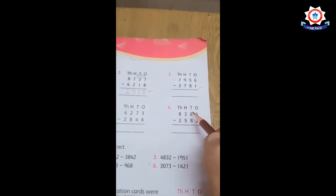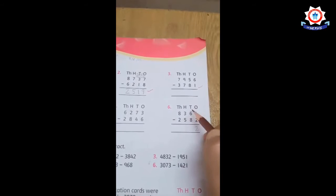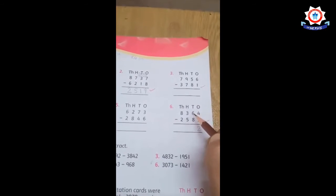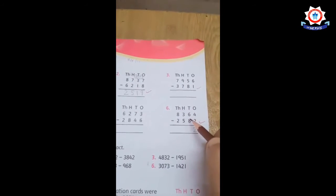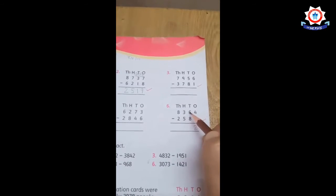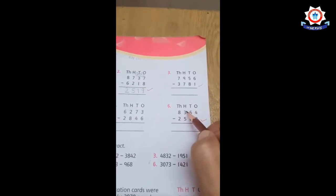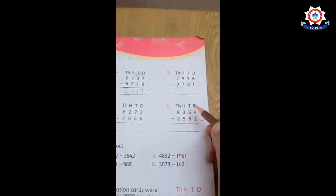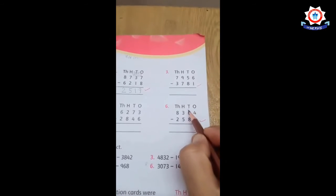Now we subtract 8 from 6, so 6 is smaller than 8. What do you do? You borrow 1 from the next column, so 6 becomes 16.